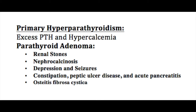Nephrocalcinosis can lead to renal insufficiency with polyuria. The hypercalcemia can also affect the CNS, causing disturbances such as depression and seizures. It can also lead to constipation, peptic ulcer disease, and acute pancreatitis — hypercalcemia producing acute pancreatitis is particularly high yield. Finally, because of high PTH levels, there is massive resorption of bone, eventually producing fibrosis and cysts within the bone, called osteitis fibrosa cystica.